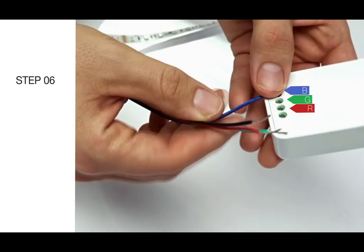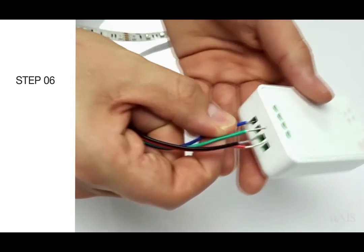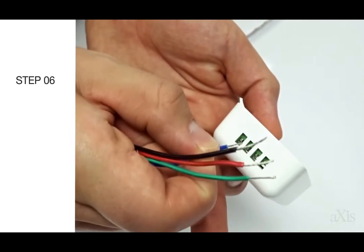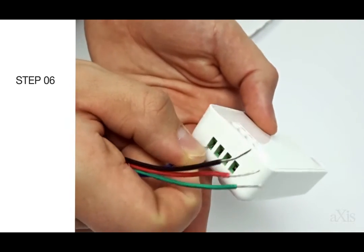Step 6. There are four different colors of cables that connect to the connector box. Match the cables to each color where it belongs in the connector box.